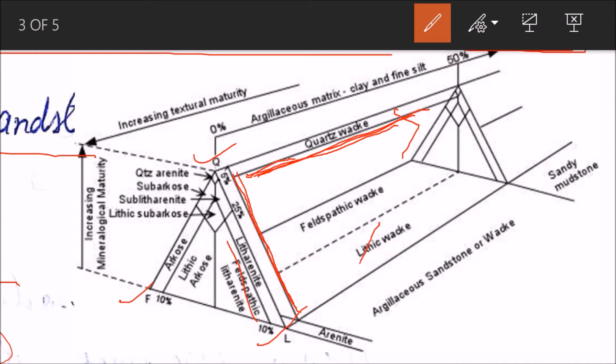Then there is arkose and lithic arkose. At the top you see quartz here, this is quartz arenite. Then there is sub-arkose, sub-litharenite. This side, this shaded portion - litharenite and lithic sub-arkose here in the middle.